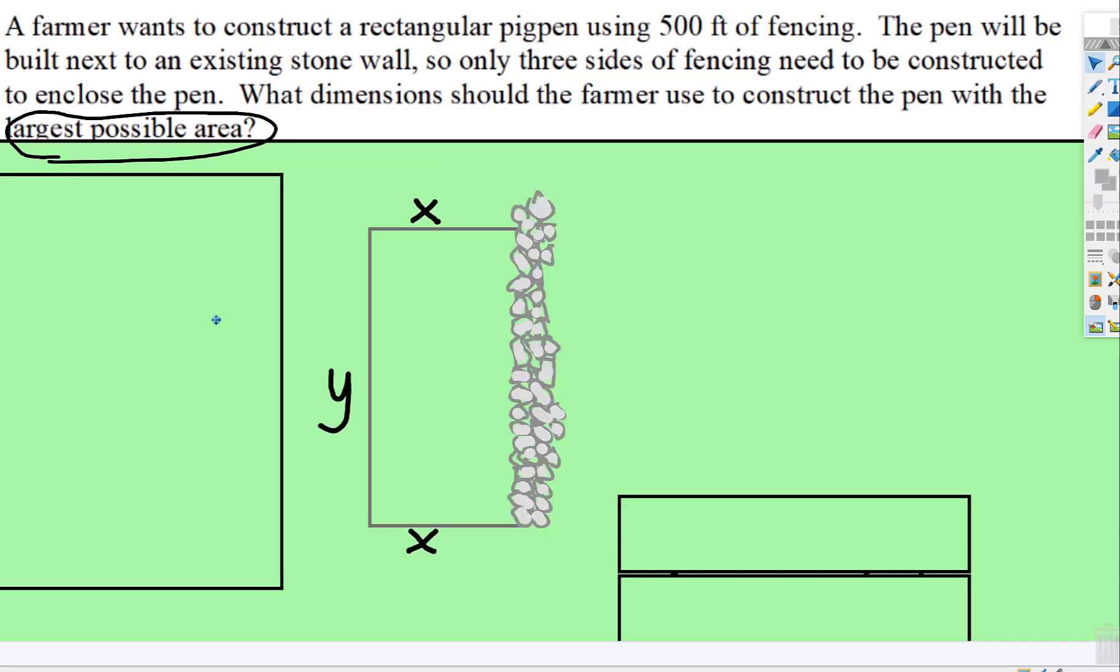The criteria is that one of the sides is against the stone wall, so there's only going to be three sides. So here are our three sides, and I've labeled the horizontal sides x and the vertical side y.